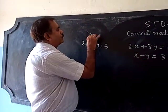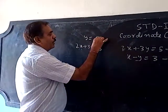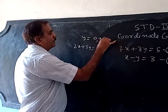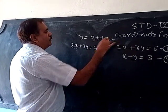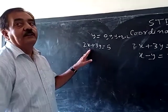2x plus 3y is equal to 5, we will put the value of y: 0, then 1, then minus 1, plus 2, minus 2. We will leave the value corresponding value of x when it is coming in fraction.